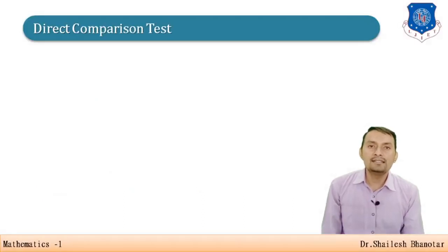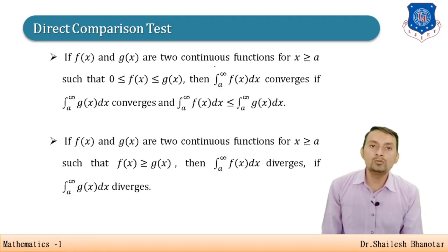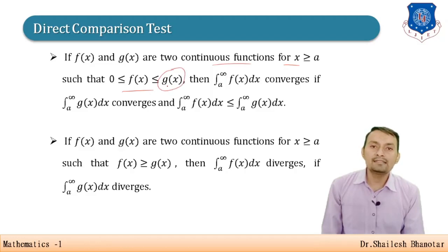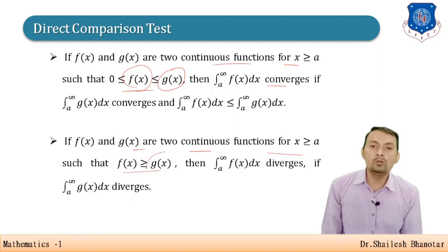Now the comparison test. For the direct comparison test: suppose f(x) and g(x) are continuous for x ≥ a with 0 ≤ f(x) ≤ g(x). If the larger integral ∫ₐ^∞ g(x) dx is convergent, then the smaller ∫ₐ^∞ f(x) dx is also convergent. If the smaller ∫ₐ^∞ g(x) dx diverges, then the larger ∫ₐ^∞ f(x) dx also diverges.